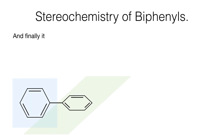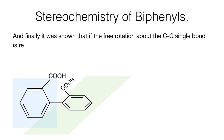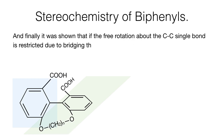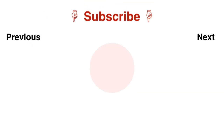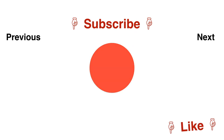And finally, it was also shown that if the free rotation about the carbon-carbon single bond is restricted due to bridging of the two benzene rings, then the molecule will not be coplanar and hence it will show optical activity. For example, in this molecule the two benzene rings are bridged by an OCH2NO group, and therefore the free rotation is now restricted. Thus, it is clear that the non-planarity of the molecule causes molecular chirality and hence optical activity.